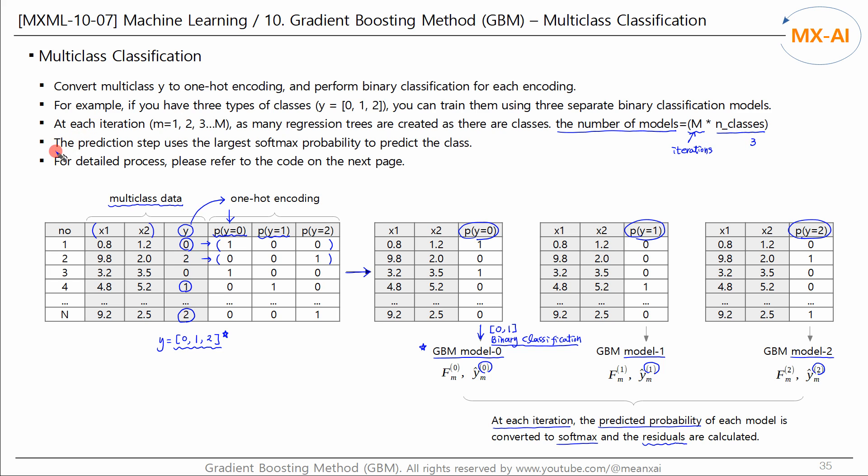And in the prediction stage, the class with the highest softmax probability is selected as the final estimate. The detailed process will be covered in the code on the next page.